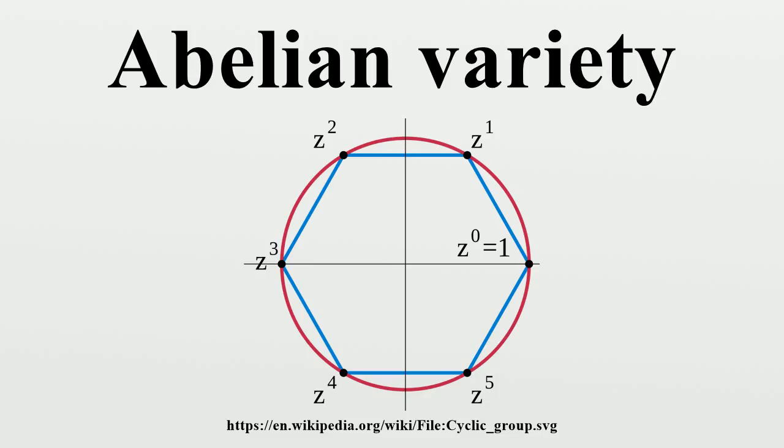Hence, its n-torsion part is isomorphic to (Z/nZ)^{2g}, i.e., the product of 2g copies of the cyclic group of order n. When the base field is an algebraically closed field of characteristic p, the n-torsion is still isomorphic to (Z/nZ)^{2g} when n and p are coprime.